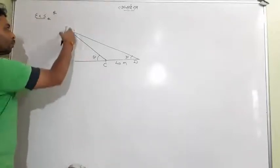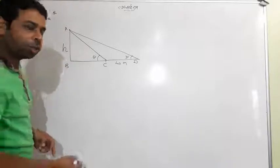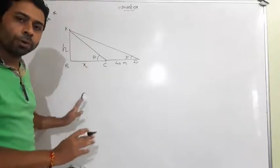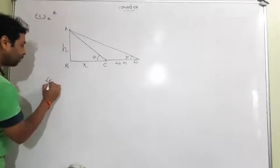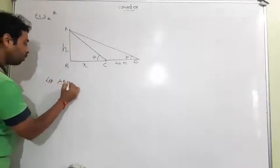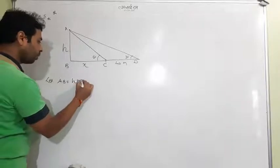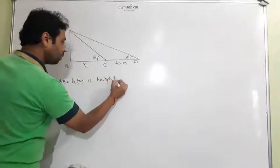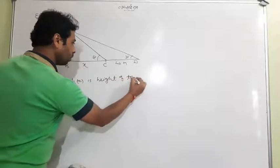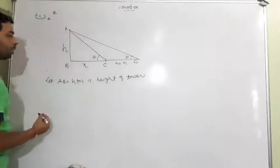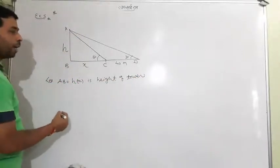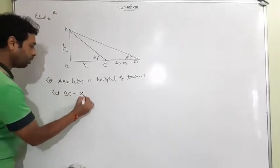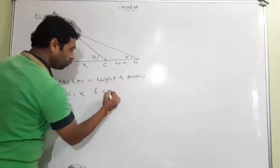Suppose we have to find AB, which I name H. Let AB equal to H meters (height of the tower), let BC equal to X meters, and CD equal to 40 meters.